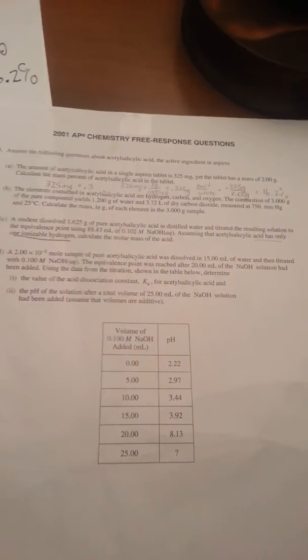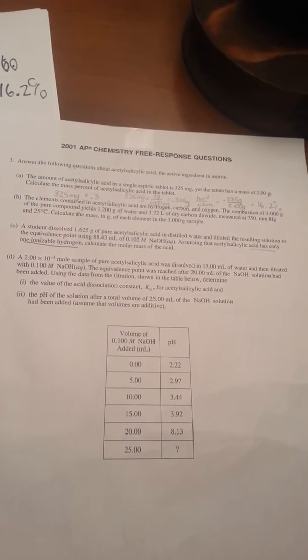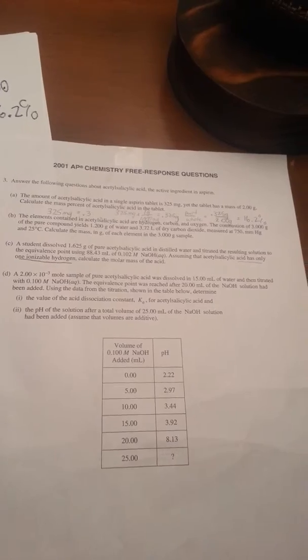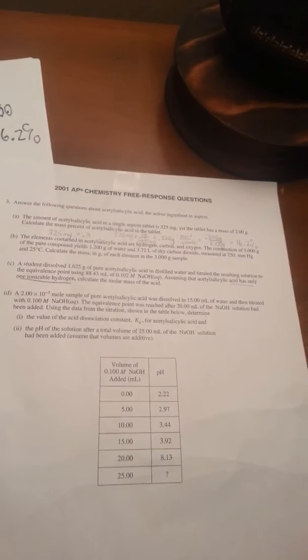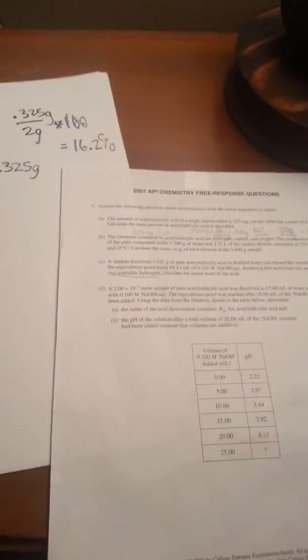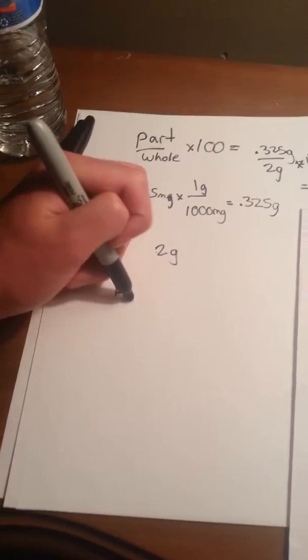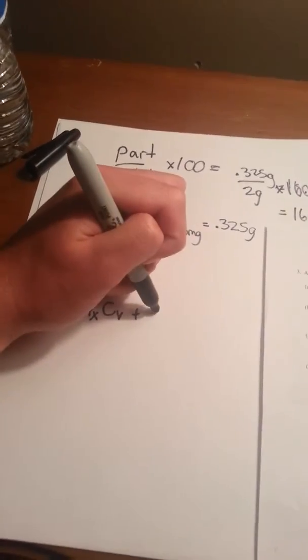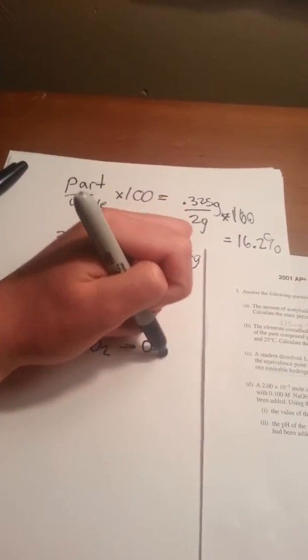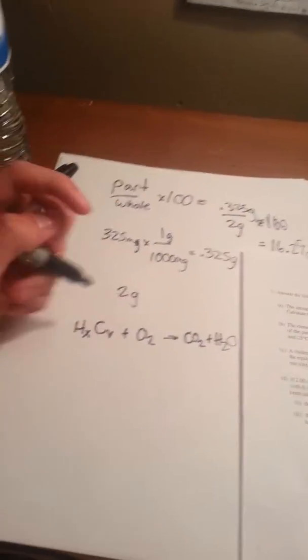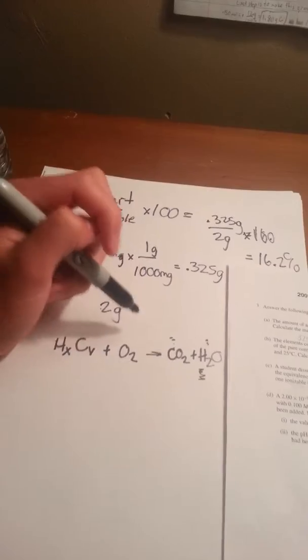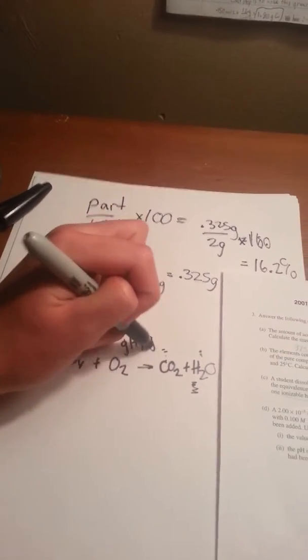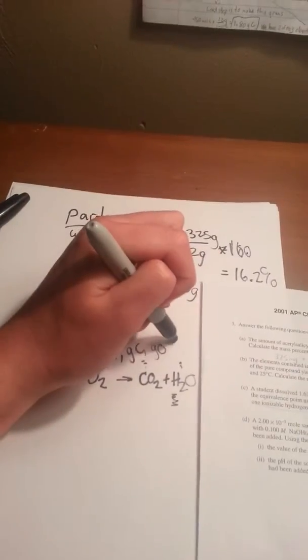Part B: The elements contained in acetylsalicylic acid are hydrogen, carbon, and oxygen. The combustion of 3 g of the pure compound yields 1.2 g of water and 3.72 liters of dry carbon dioxide, measured at 750 mmHg and 25 degrees Celsius. Calculate the mass in grams of each element in the 3 g sample. So here we have combustion of a hydrocarbon plus oxygen, giving us CO2 and H2O. We're solving for grams of H, grams of carbon, and grams of oxygen.